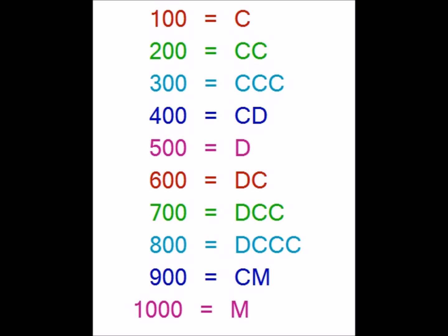For 600 we append C to D, so DC gives 600. Likewise, DCC gives 700 — we are adding 200 to 500. For 800 we have triple C appended, indicating adding 300 to 500, so DCCC gives 800.